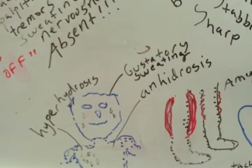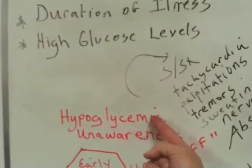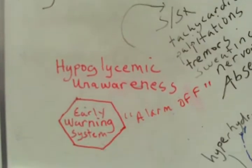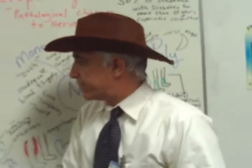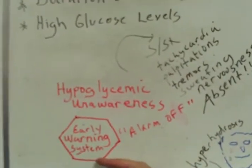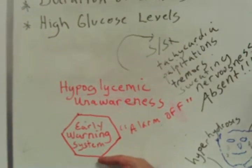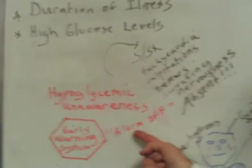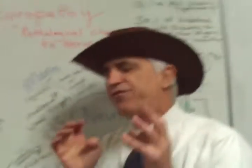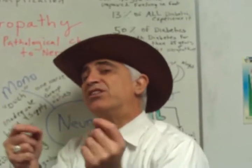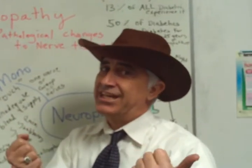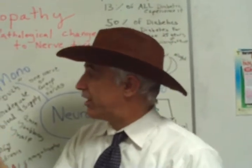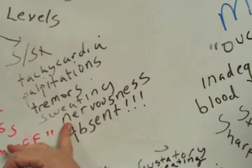One of the other important factors with autonomic neuropathy is hypoglycemic unawareness. We know hypoglycemia is a life-threatening situation, so our body has a warning system — much like a smoke detector. With hypoglycemic unawareness, the alarm is off. The first manifestation of hypoglycemia is the sympathetic component of the autonomic nervous system kicking in — but that alarm system is off. So these warning signs will be absent: tachycardia, palpitations, tremors, sweating, and nervousness.